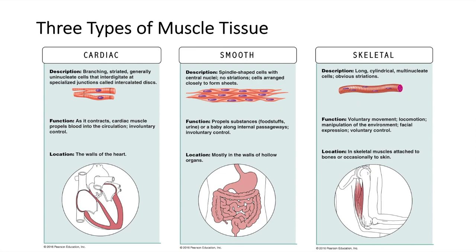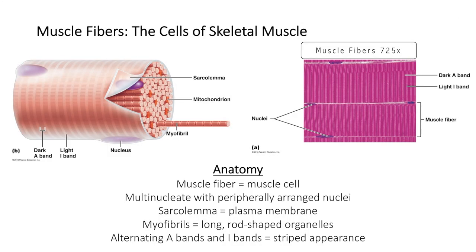Skeletal muscle is made up of relatively large, long, cylindrical cells called muscle fibers. Since hundreds of embryonic cells fuse to produce each muscle fiber, the cells are multinucleate. Multiple oval nuclei can be seen just beneath the plasma membrane.